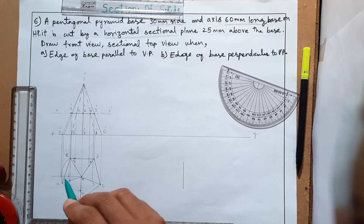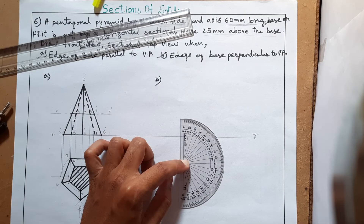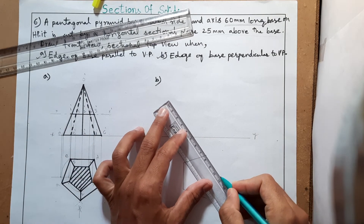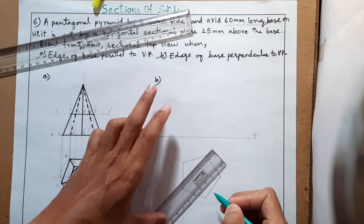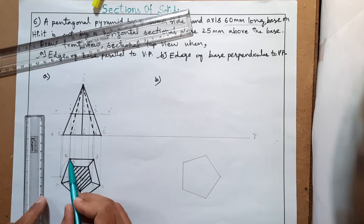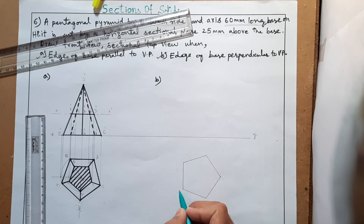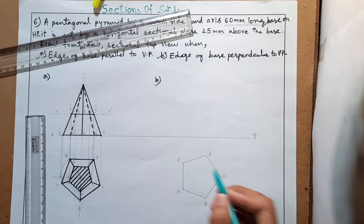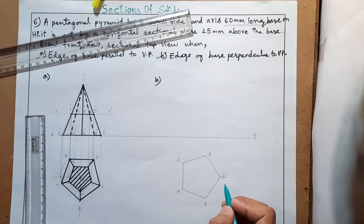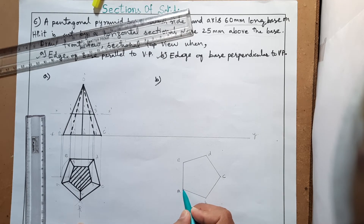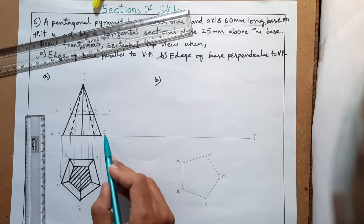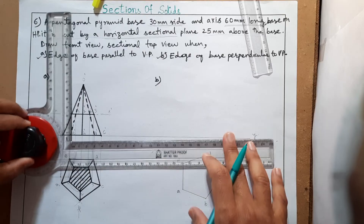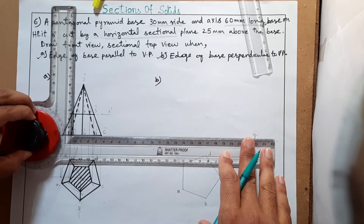The pentagon construction in the top view of the second part (bit b) is completed. Here the orientation is slightly different — edges are vertical instead of horizontal. Start numbering from here: a, b, c, d, e. It is preferable to start from the bottom-left corner because the front view will come out in order. Align the scale and project all points onto the front view.